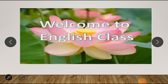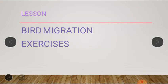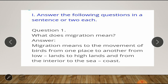Hello children, welcome to English class. In today's class we will do the exercise part of the lesson on bird migration. First question: answer the following questions in a sentence or two. Question number one: what does migration mean? Answer: migration means the movement of birds from one place to another, from lowlands to highlands and from the interior to the sea coast.